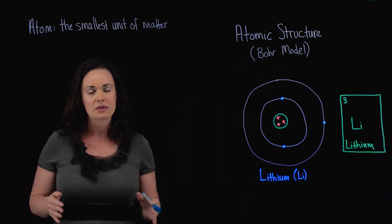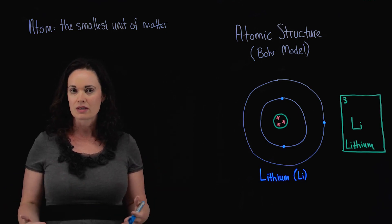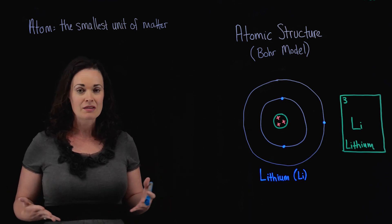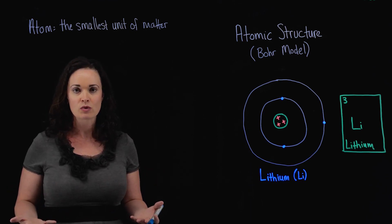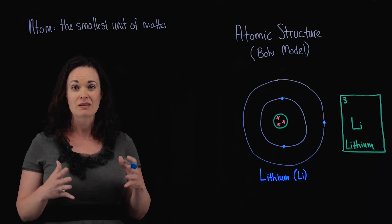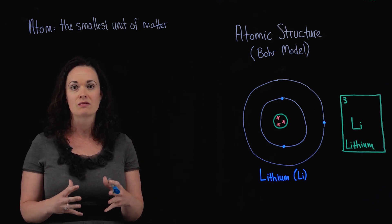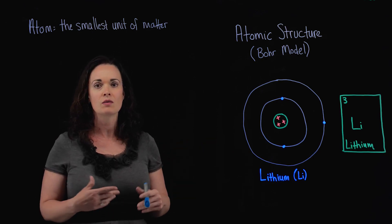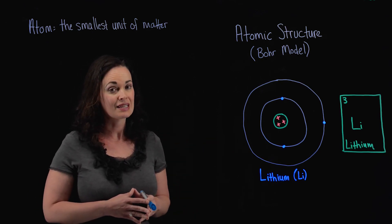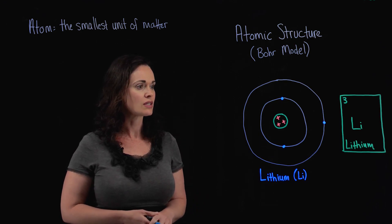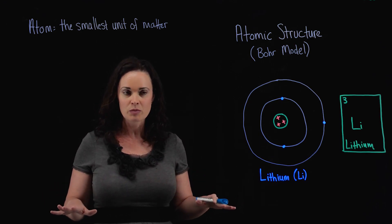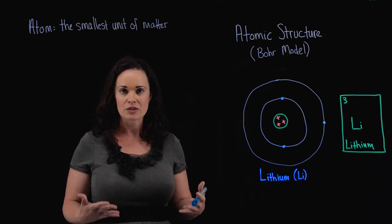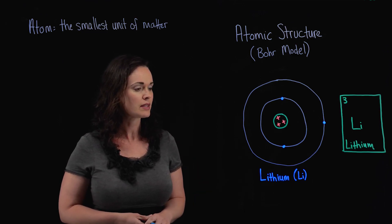My definition of an atom is it's the smallest unit of matter. Everything in the world, everything in our bodies, is made up of atoms. One element that many of you are probably familiar with — maybe you have some jewelry made out of it — is gold. The smallest unit of gold is an atom of gold. I've got what's known as a Bohr model drawn here. These are teeny tiny, not observable even with the most powerful microscopes we have, so we don't have pictures of them, but we do have these representations that scientists have come up with.